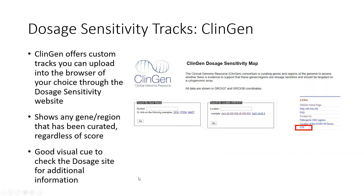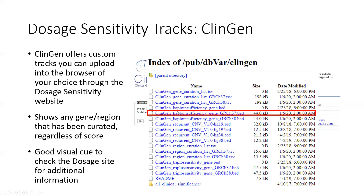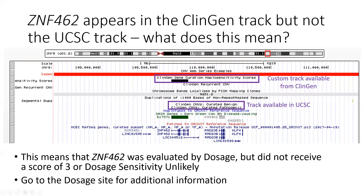The second track — the custom track — can be obtained from our dosage sensitivity website through different custom tracks that you can upload into the browser of your choice. This track shows any gene or region that has been curated regardless of the score, whereas the UCSC native track only shows those with a high score of three or the dosage sensitivity unlikely score. It serves as a good visual cue to check the dosage site for additional information. Going back to our screenshot, we see nothing in the native UCSC track, but there is something in the ClinGen track — it looks like we have evaluated the gene ZNF462. Because it's not also showing in the UCSC track, that tells us it was evaluated but did not receive a score of three or dosage sensitivity unlikely. This is our cue to go to the dosage site.